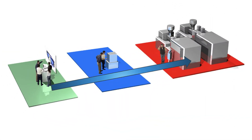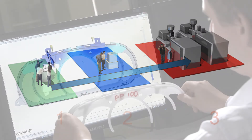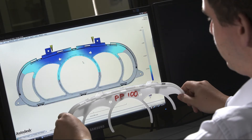Unfortunately, the complex functional or aesthetic requirements of a part often lead to designers breaking many of these rules, with detrimental consequences downstream in mold design and production. The use of simulation can be very valuable in reducing or potentially eliminating these risks.